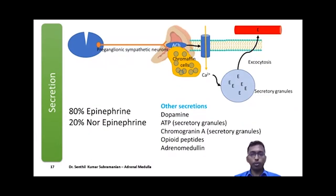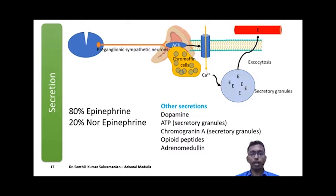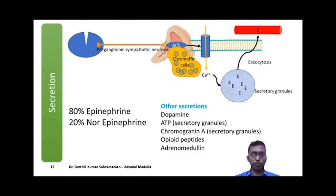Regarding sympathetic stimulation: the preganglionic sympathetic neurons secrete acetylcholine at the level of the medulla, which acts on calcium channels present in the cell membrane of chromaffin cells. This increases calcium levels inside the cytoplasm, which then leads to exocytosis of secretory granules. This is the mechanism of catecholamine secretion from chromaffin cells.